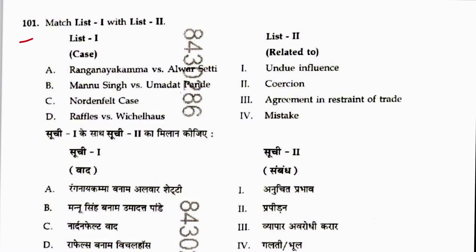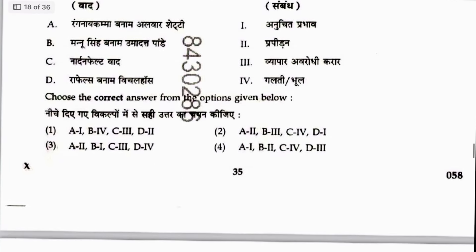Question 101: Match cases — Rangaswami vs. Alveratti is on coercion (Section 15 to 19). Mannu Singh vs. Umadat Pandey is on undue influence. Northern Felt case is on agreement in restraint of trade. Raffles vs. Wichelhaus is on mistake. Sequence is 2, 1, 3, 4. Answer is 3.